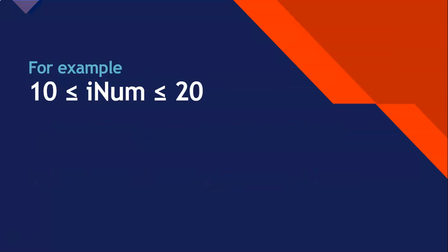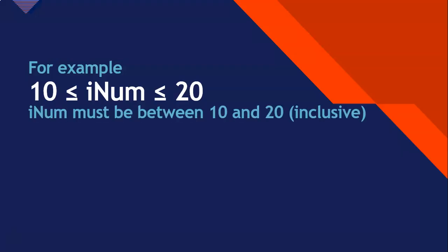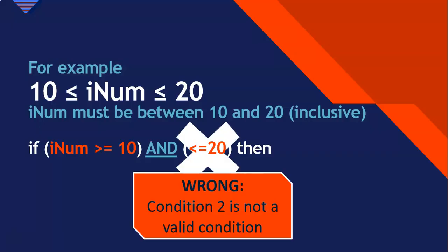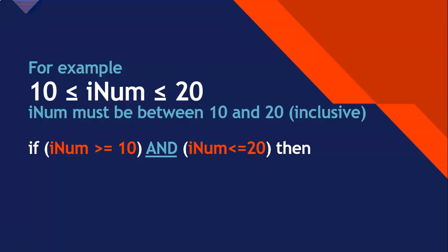Let's use an example. In mathematics, you might see something that means NUM must be between 10 and 20 inclusive — including 10 and 20. We tend to say it like: NUM must be greater than or equal to 10 but less than or equal to 20. And we might think that's how we do it in Delphi. But that second condition — less than or equal to 20 — is not a valid condition on its own. I can't say if it's true or false because I don't know what it's comparing. You must write it out in full with a variable, operator, and value. So you must say: NUM is greater than or equal to 10 AND NUM is less than or equal to 20.